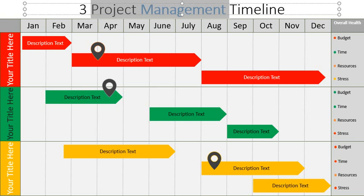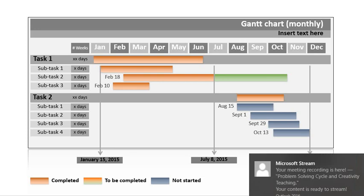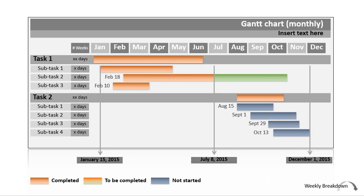We're going to move on to another example of a Gantt chart to show you it looking in a different way. Over here you can see it's also working in months — January, February, March, April. Then it has this word here: Task One. This is where you would need to put in what your major task is.